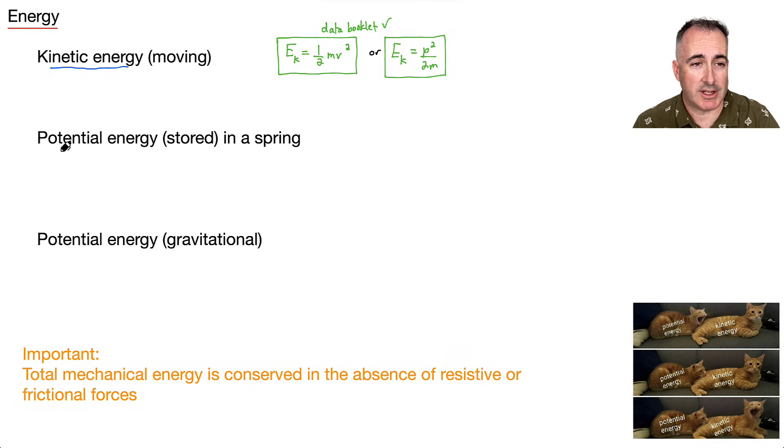What about the potential energy stored in a spring? That one is also in your data booklet. EH, where H stands for Hooke's Law, equals one half k delta x squared.